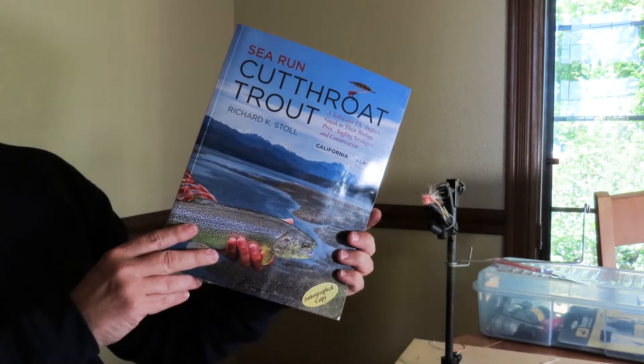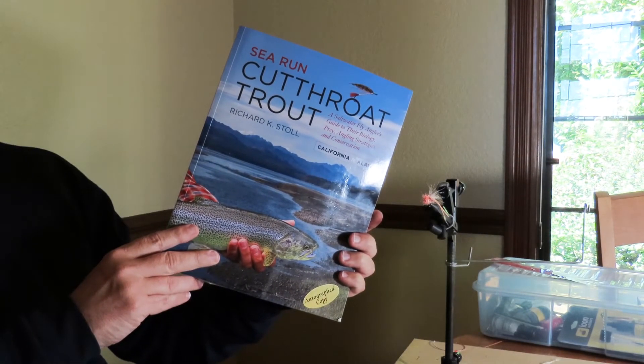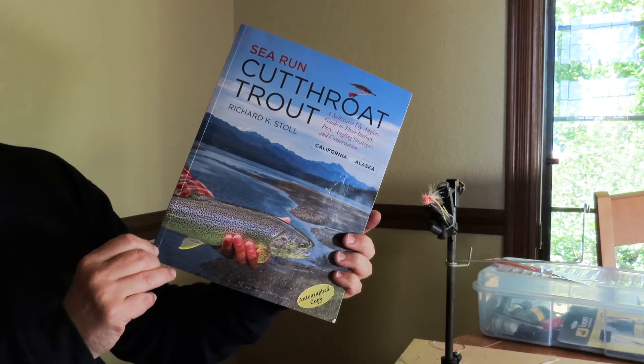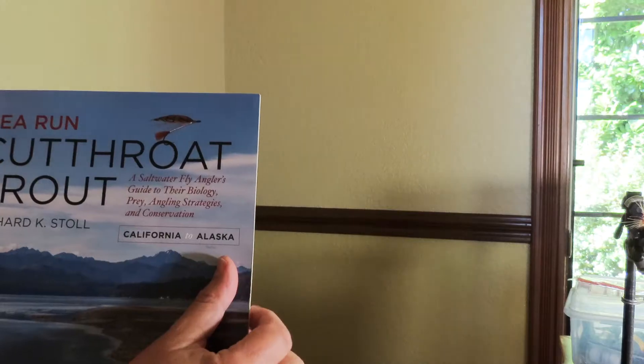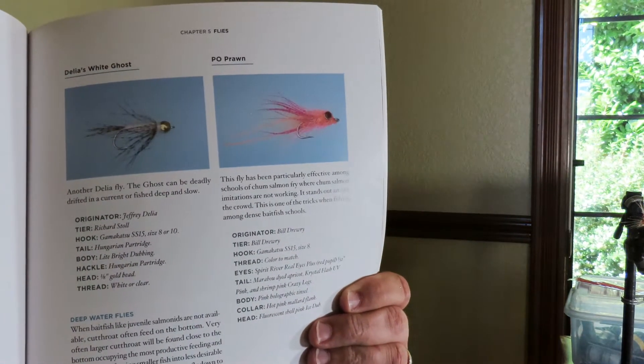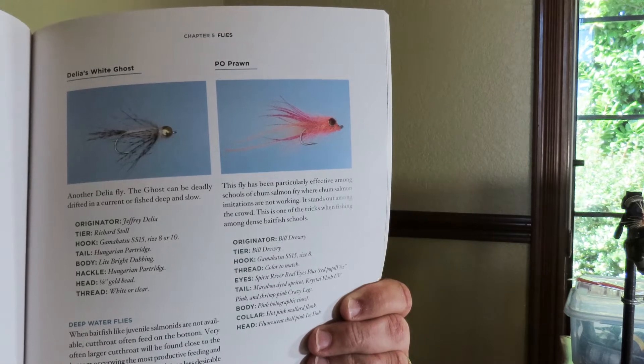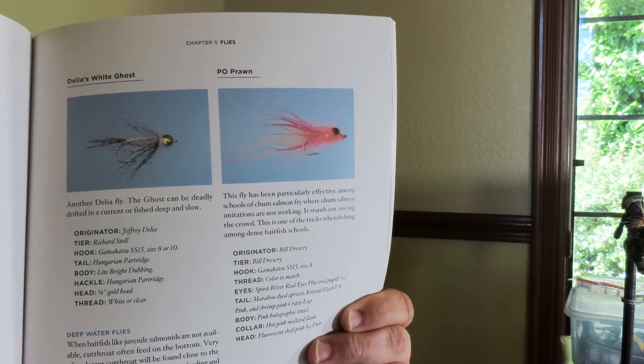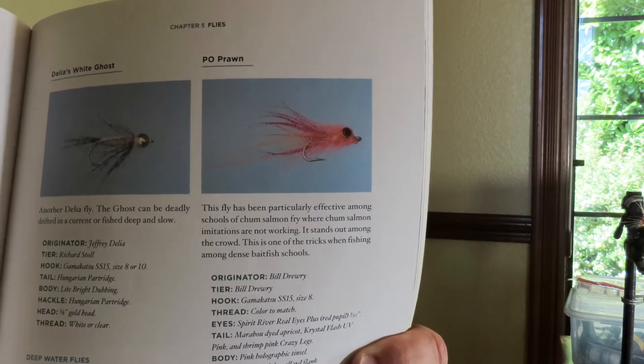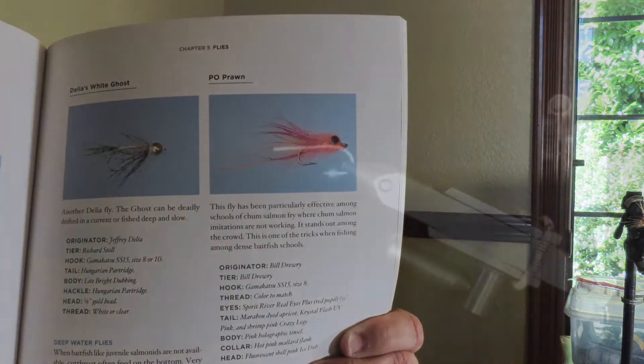Today I'm going to be tying a fly that's featured in this excellent book on sea-run cutthroat trout by Richard Stoll, who runs a fly fishing shop here in my hometown of Poulsbo, Washington. This is the fly right here, the P.O. Prawn. There's a good recipe in the book and you can buy these flies online, but I haven't seen any step-by-step instructions, so I'm going to show you the way that I like to tie it.